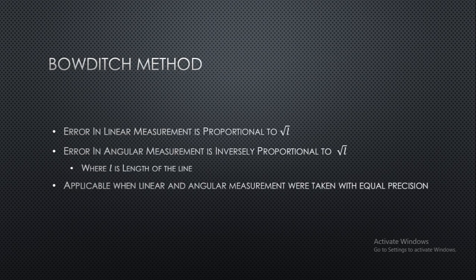So what is graphical method? It is nothing but a modified form of Bowditch rule only, in which we don't have to do any calculation like in Bowditch rule. But we have to apply this method directly over the traverse. I will explain how to apply this correction with the help of an example.